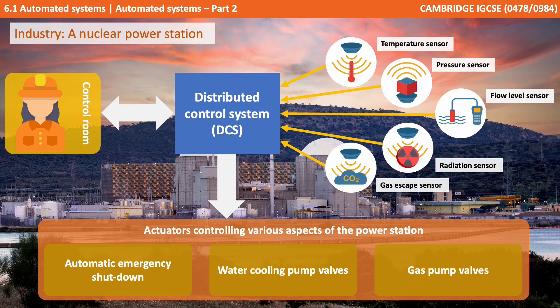Based on predefined sets of rules, they'll be controlling various actuators and motors that operate various parts of the power station, such as water cooling pumps and valves, gas pumps, and initiating automatic emergency shutdowns. All this information will also be fed to supervisors in a control room, who can take manual intervention at any point.